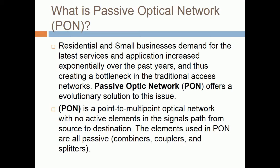PON is a point-to-multipoint optical network with no active elements in the signal's path from source to destination. The elements used in PON are all passive: combiners, couplers, and splitters.